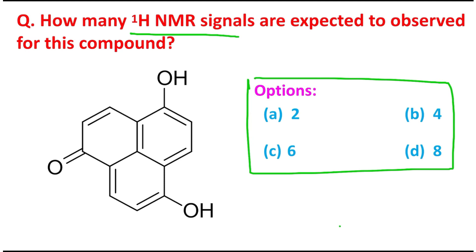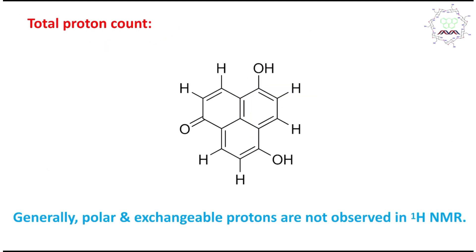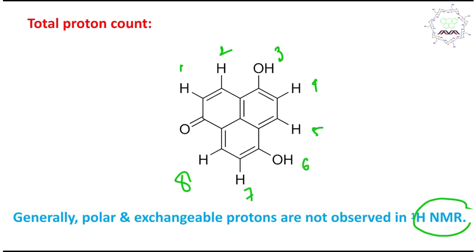Let's start the problem. Before going into the details, we should look at the proton count because our question is about proton NMR or 1H NMR. We need to focus on how many protons are there in this molecule according to the structure represented in the problem. I can count one, two, three, four, five, six, seven, eight types of protons.